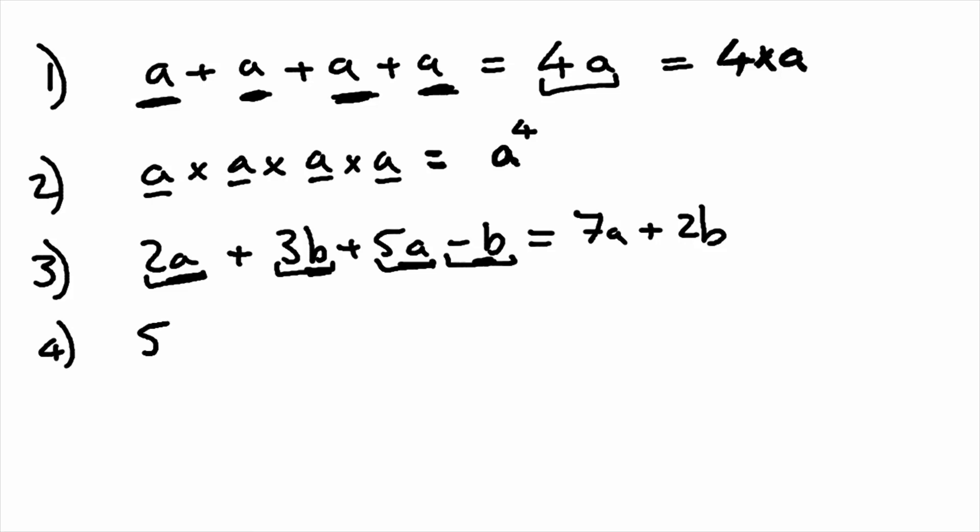Question four: 5X squared plus 3X minus X squared plus 4. Now we've got to understand here that X squared and X are different. They are not the same, so we cannot group these together.